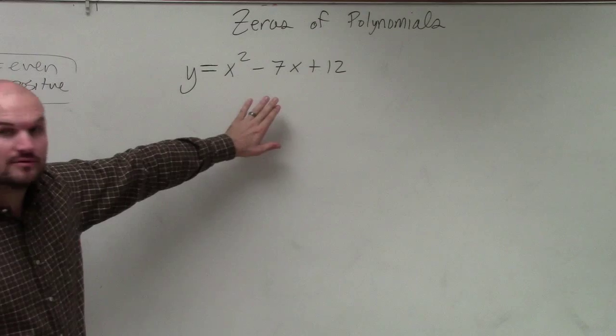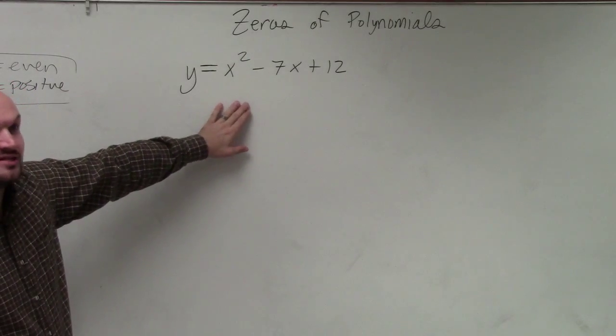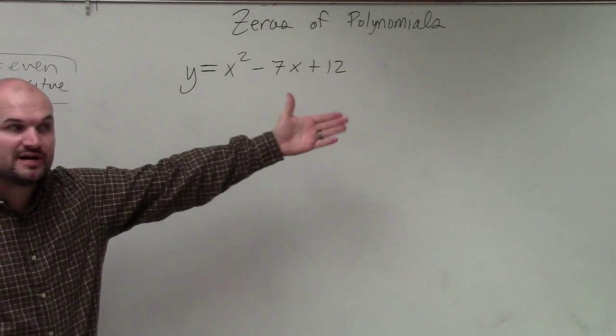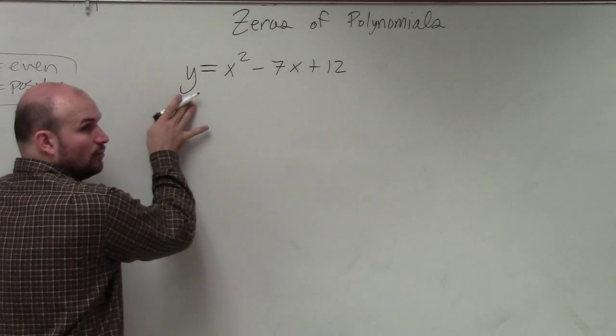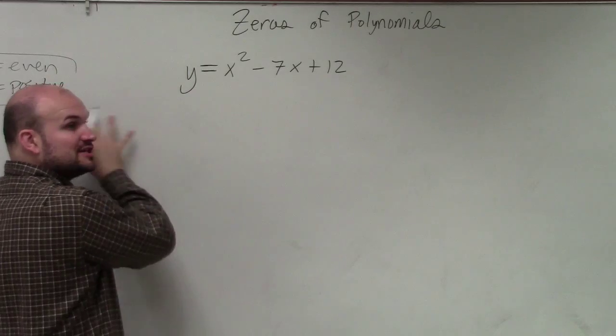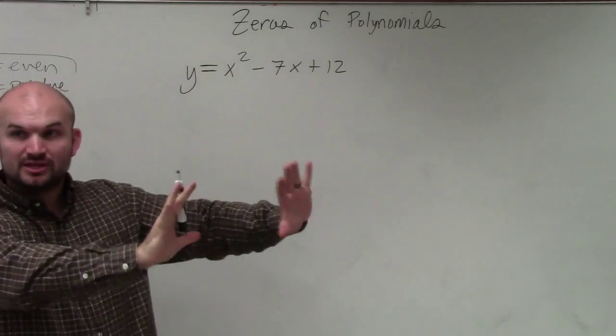So the first thing we're going to look into is we just factor this. And guess what? The process of factoring a quadratic is going to be the same thing as factoring a polynomial. We're going to replace our y or f of x, or just make sure the whole polynomial is set equal to 0.